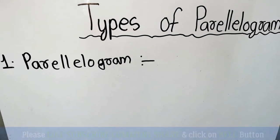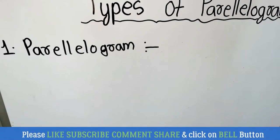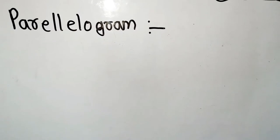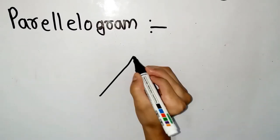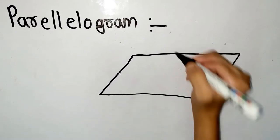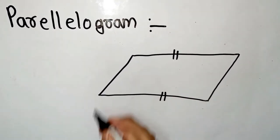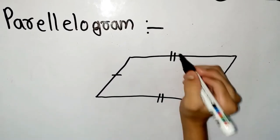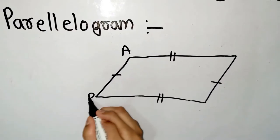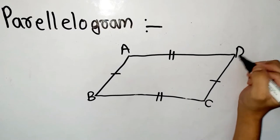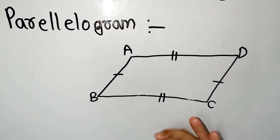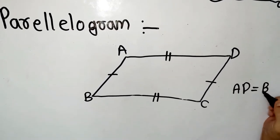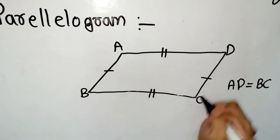A parallelogram is a shape which has two pairs of parallel sides. I will show it with an example. This line is parallel to this line, and this one is parallel to this one — labeled A, B, C, and D. So AD equals BC and AB equals DC.